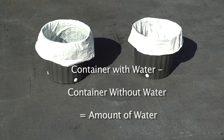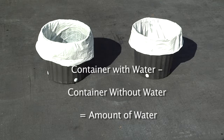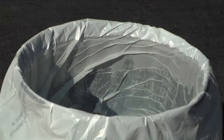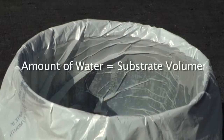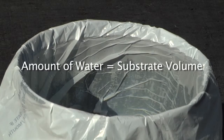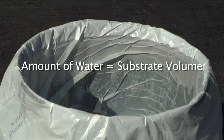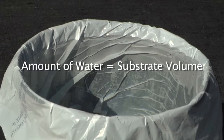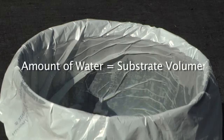Subtract the weight of each empty container from the weight of each container with water. Average the weights to obtain the amount of water in the containers. The amount of water in the containers is equal to the substrate volume because one gram of water equals one milliliter.